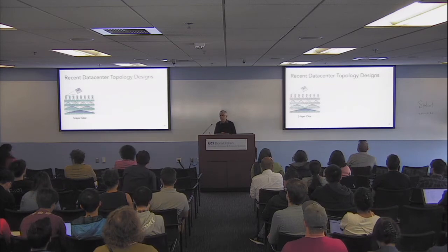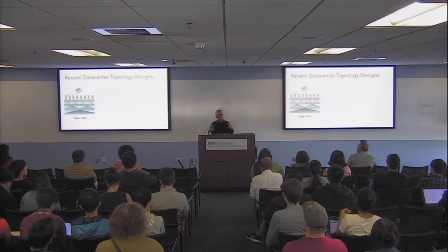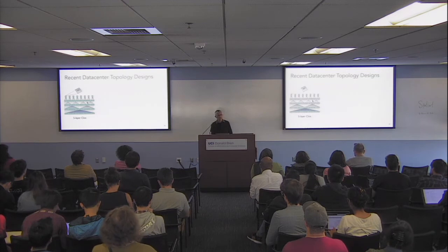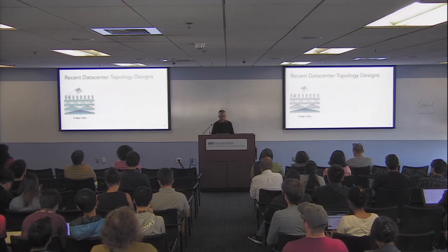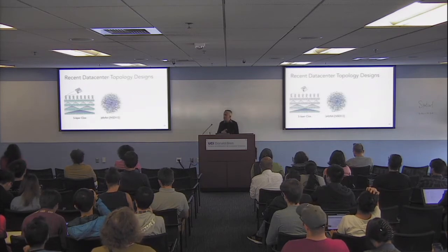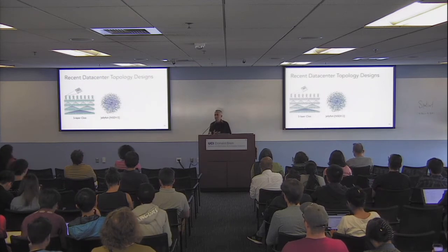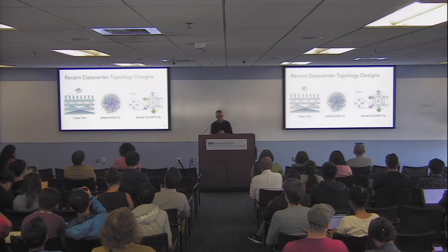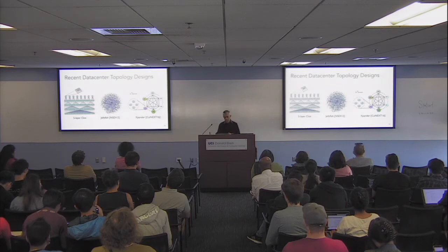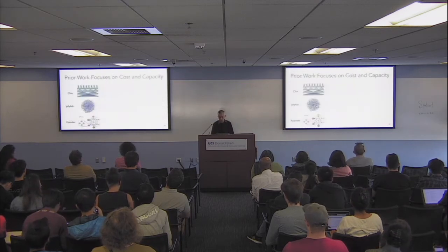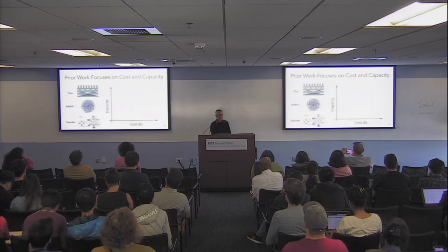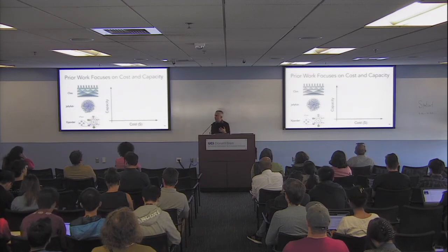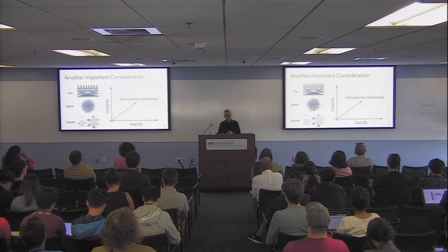If you've worked in the networking space, you know people build these networks using very large network topology designs. There are two or three kinds: one is very structured — the Clos topology, where each node is a Broadcom switching chip. Another is a very random kind of graph, which has an expansion property giving high capacity. The third is a similar expander-type network that is a bit more structured. A lot of prior work focused on cost and capacity — how do I build a high-capacity network at the lowest cost?